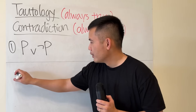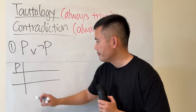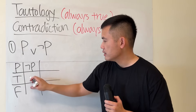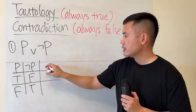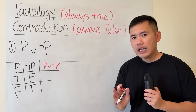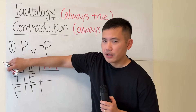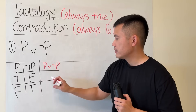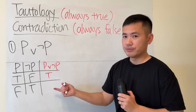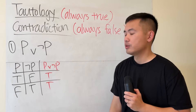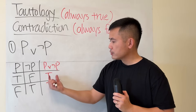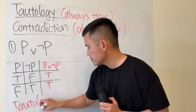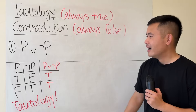Let's verify with a truth table. We have p with two rows: true and false. Then not p, which is the negation, gives false and true. Finally, p OR not p: true or false is true, and false or true is also true. The final column is always true, so this is indeed a tautology.